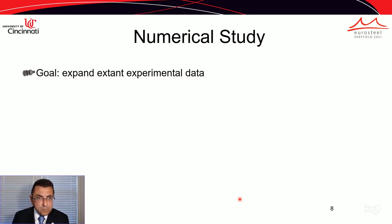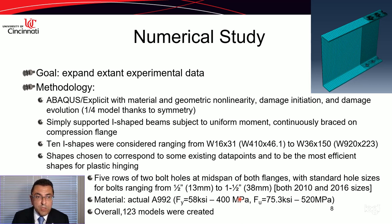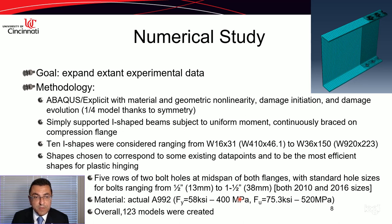Our goal was to expand the experimental data. We used Abaqus Explicit with material and geometric nonlinearity, including damage initiation and, to a lesser extent, damage evolution. We modeled simply supported I-shaped beams subject to uniform moment, continuously braced on the top flange to prevent lateral torsional buckling. Ten I-shapes were modeled, ranging from W20x31 to W36x150, chosen to correspond to existing data points and to be the most efficient shapes for plastic hinging.